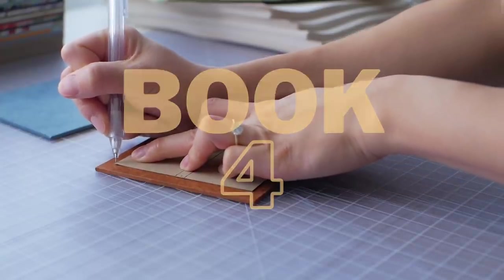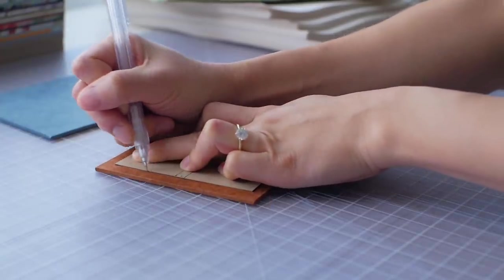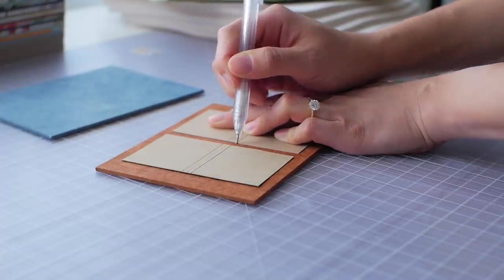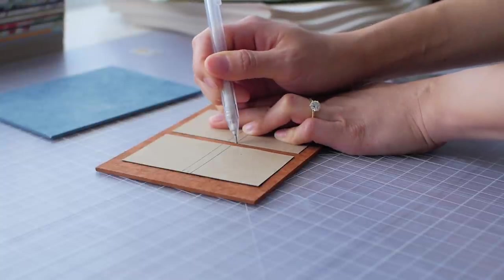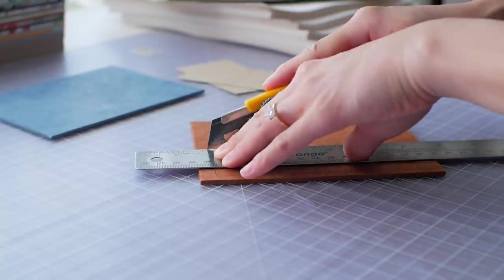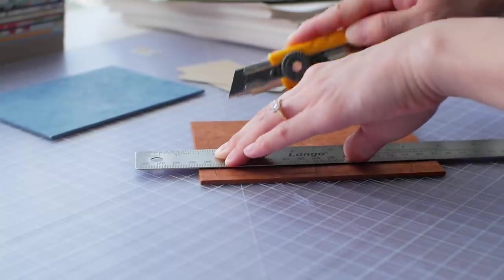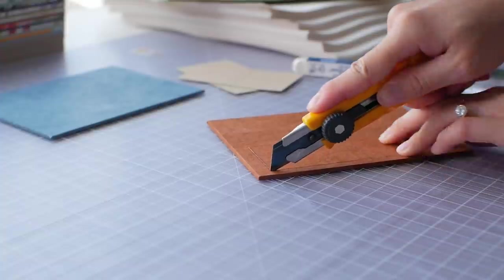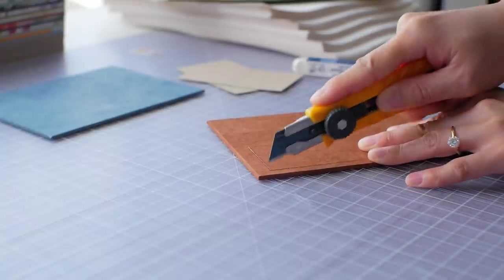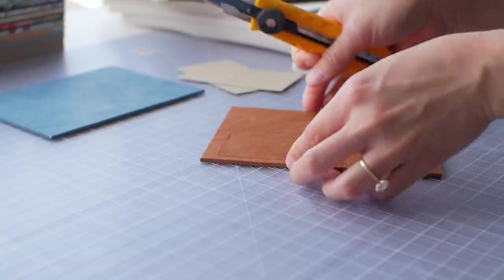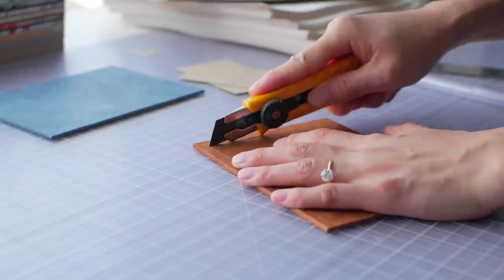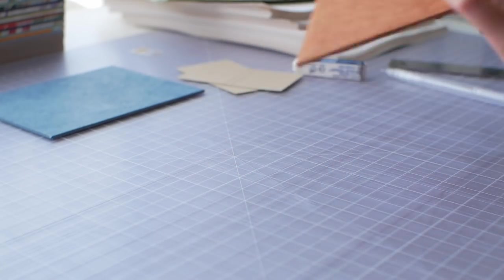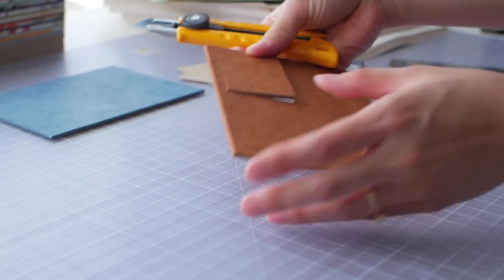For my fourth book, I had the idea of replicating a lantern but it got too complicated because I wanted an element of light coming through. I only had one color of tissue paper so I just decided to create a window scene instead. I prepared the covers by covering them with locta paper and then I cut out the shapes of the windows.